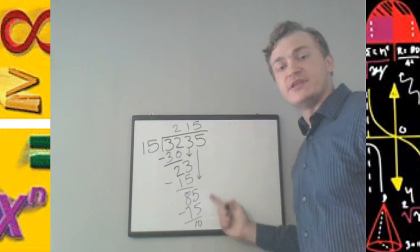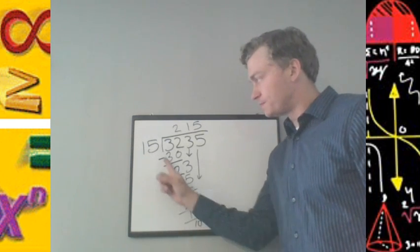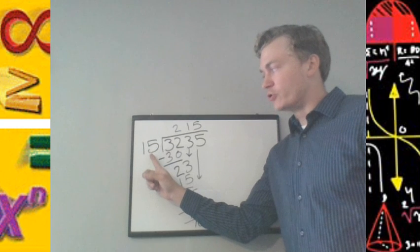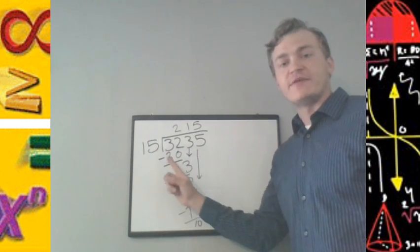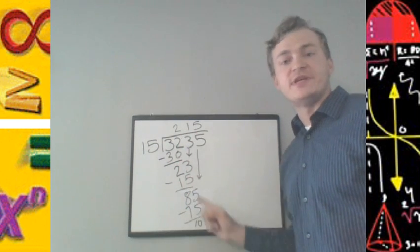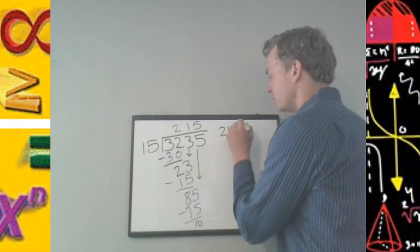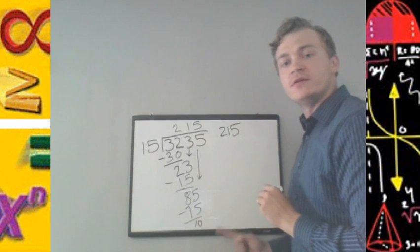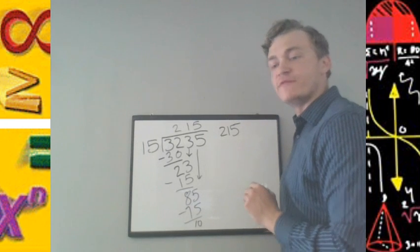There is no other digit to bring down here. Therefore, we will include that 3,235 divided by 15 is 215 with a remainder of 10. We would write this as 215 with our remainder of 10 over our divisor there of 15.